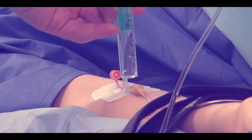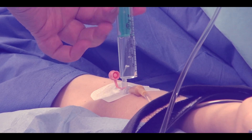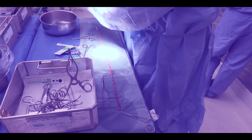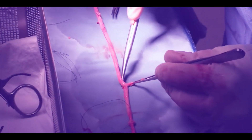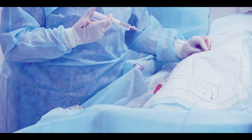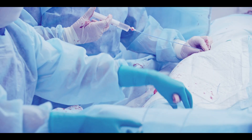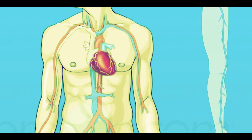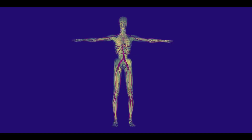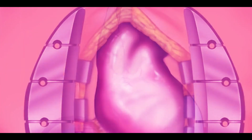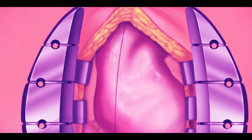Coronary artery bypass surgery is performed under general anesthesia. The first step in the procedure is to prepare the arteries or veins that will be used as bypass grafts. Blood vessels, or grafts, used for the bypass procedure may be pieces of a vein from your leg or an artery in your chest. An artery from your wrist may also be used. The surgeon will then make an incision down the center of your chest, through your sternum, to view your heart and coronary arteries.